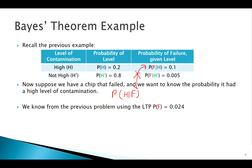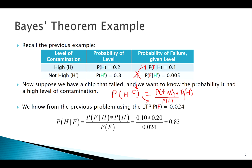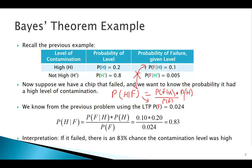Using Bayes' Theorem: high given failure equals failure given high times probability of high, divided by the overall probability of failure — which we already found. Plugging in the numbers from the table, if you have a chip that failed, the probability it was highly contaminated is about 80%.